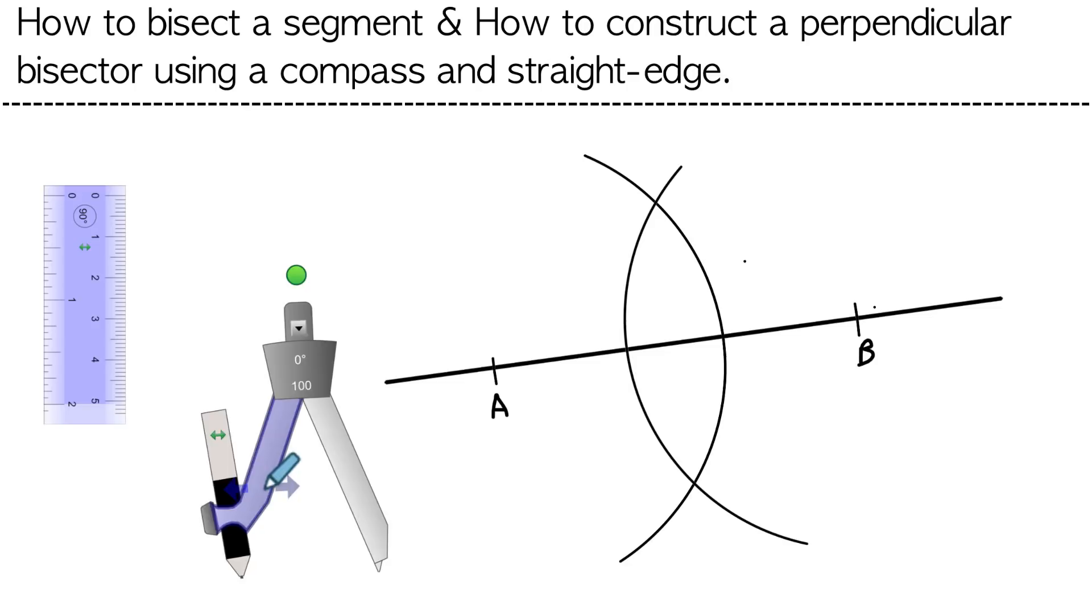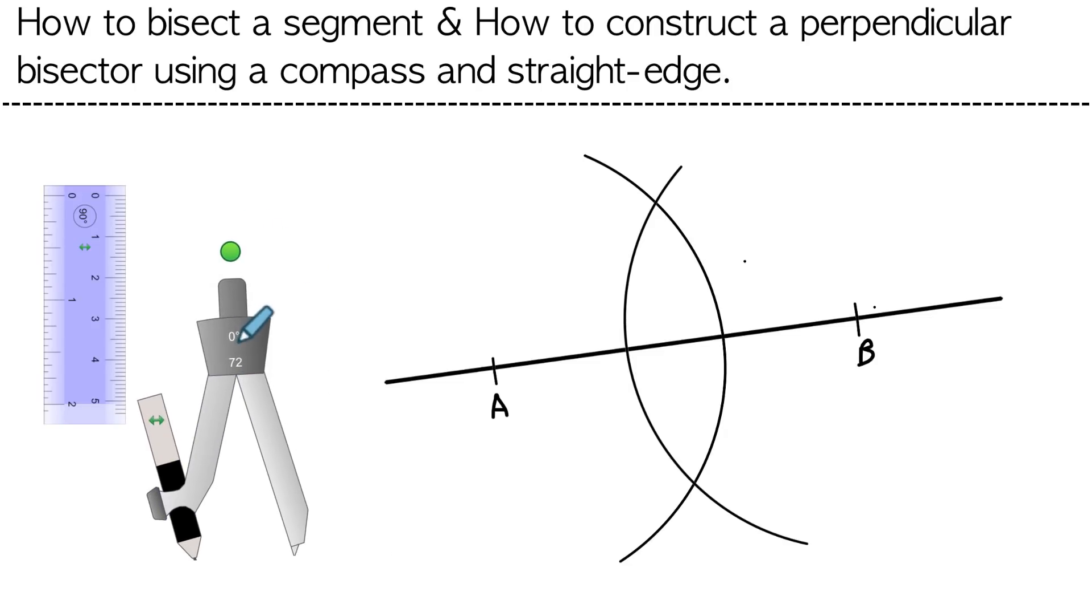At this point it doesn't matter what the measure of the compass is, you can just set it down over here. So we have two new intersection points. One on top, let's just call it C. And a little spot here on the bottom and we're going to call that D.